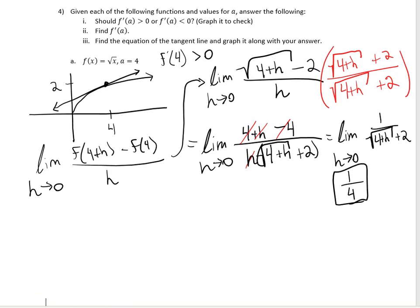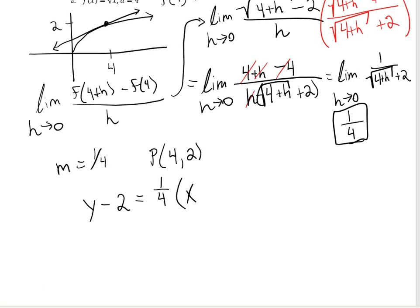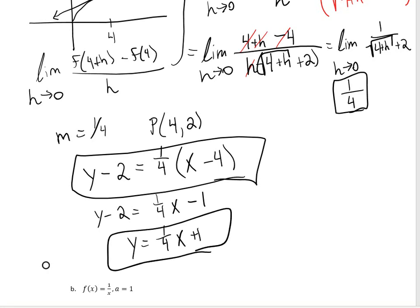Now the other thing we wanted to do was find the equation of our tangent line. So we have m equals 1 fourth. We also have the point (4, 2). So the equation for our tangent line would be y minus 2 equals 1 fourth times x minus 4. You can leave it like this, or if you prefer slope-intercept form, distribute the 1 fourth: y minus 2 equals 1 fourth x minus 1. Add 2 to both sides and you get y equals 1 fourth x plus 1. Either answer is totally fine.